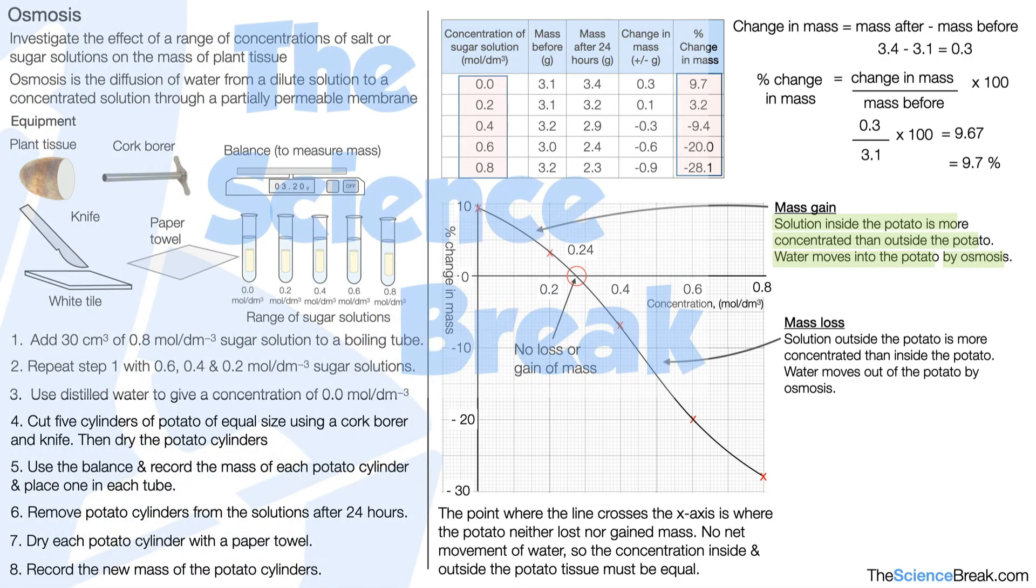The final point to make is that we have the control variables, and these are the temperature, the type of potato or plant tissue that you're using, and the age of the potato or plant tissue. So that's how we do the experiment and deal with the data from this experiment for osmosis. Let's have a look at some exam questions.